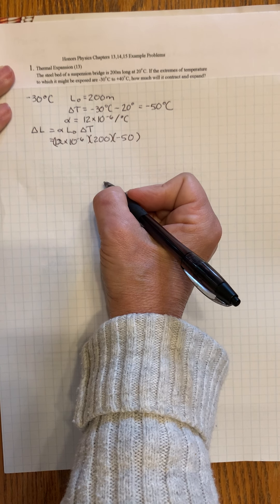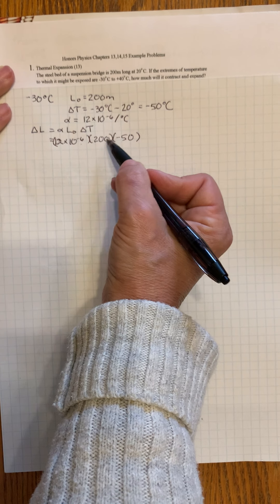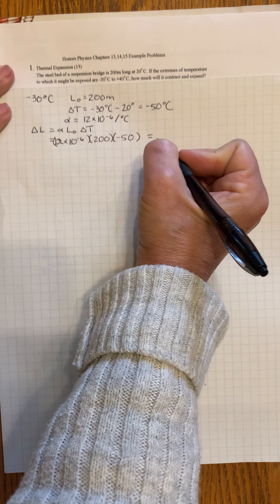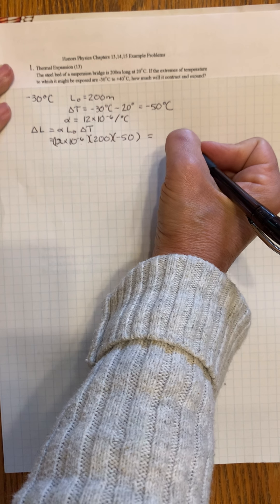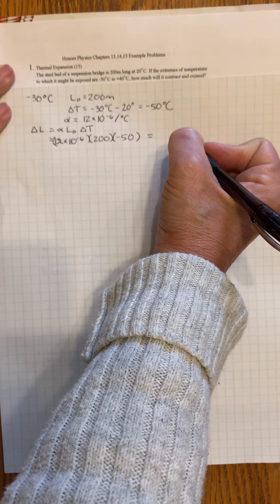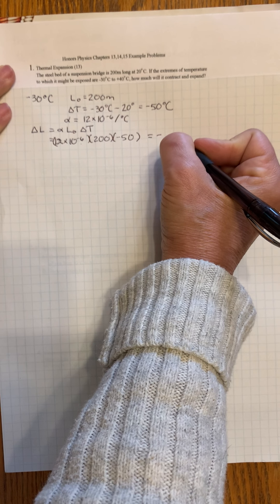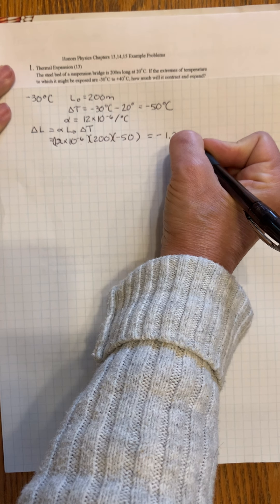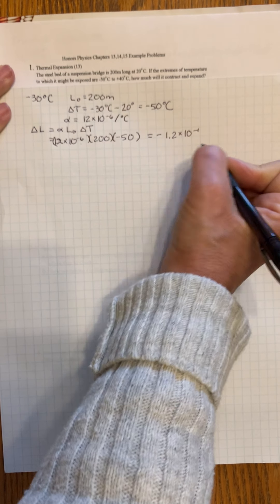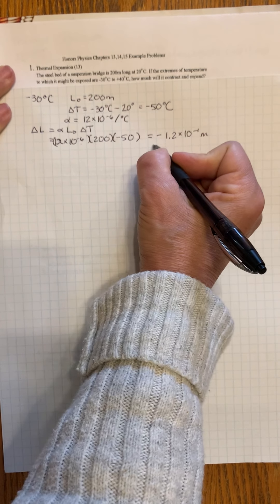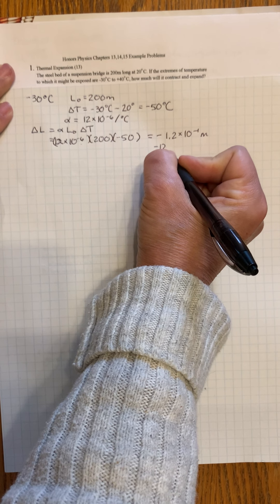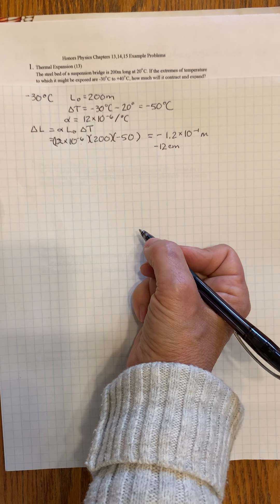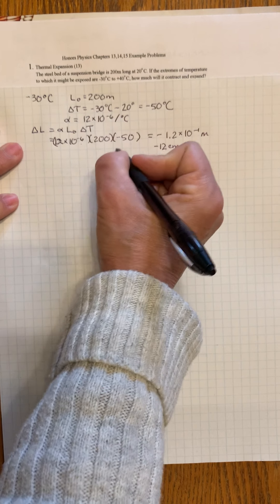The change in length is alpha times L₀ times delta T. This would be 12 times 10⁻⁶ times 200 times negative 50. This is measured in meters. That will be negative 1.2 times 10⁻¹ meters, or negative 12 centimeters, which is about 3 inches. The negative means it decreases.